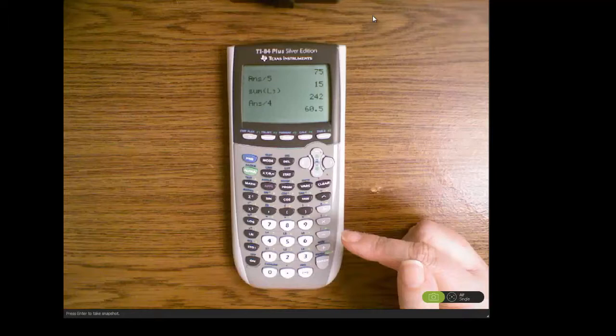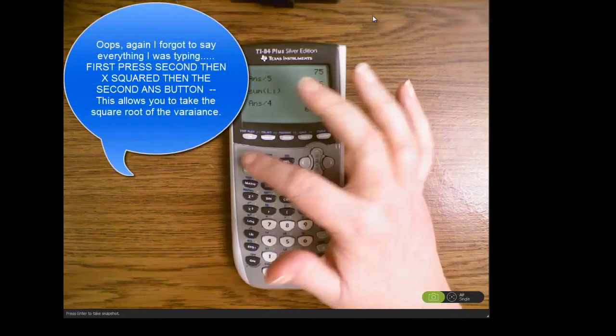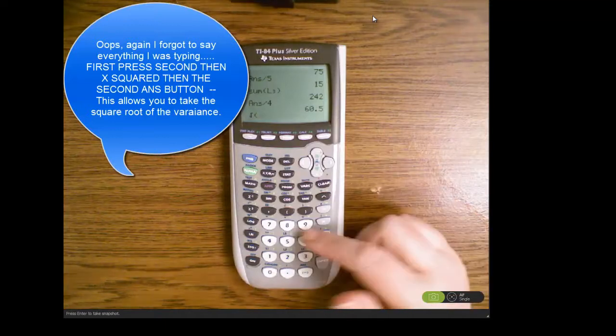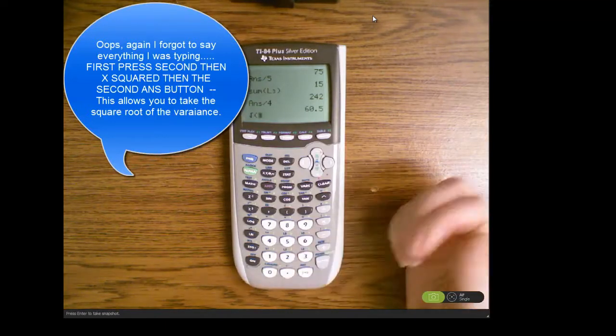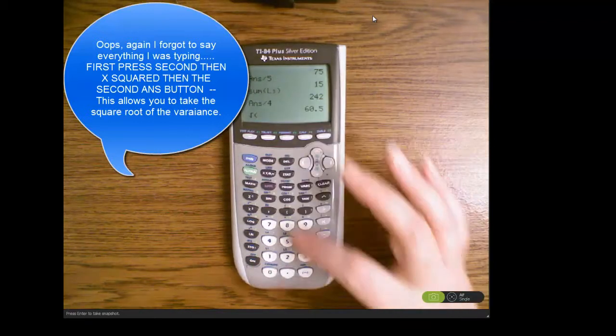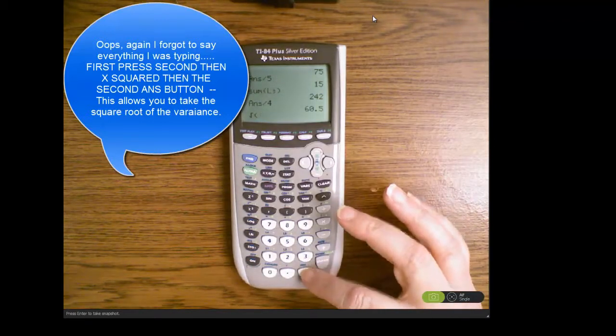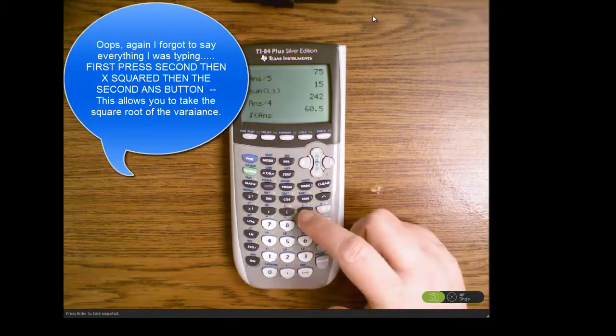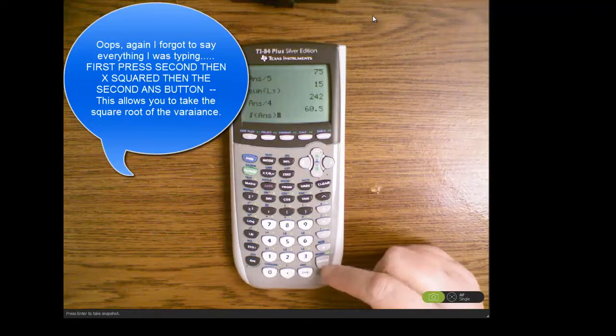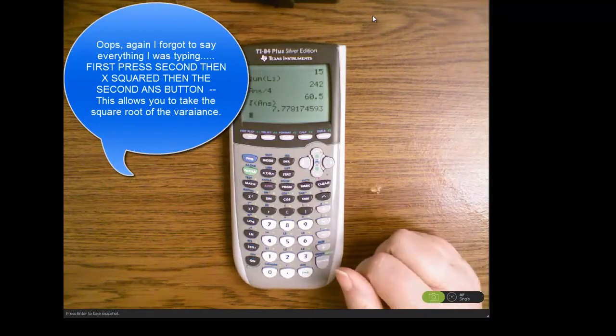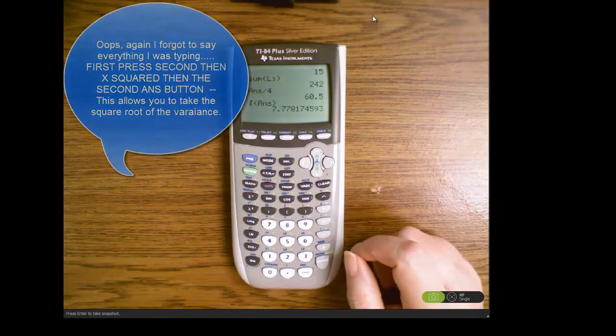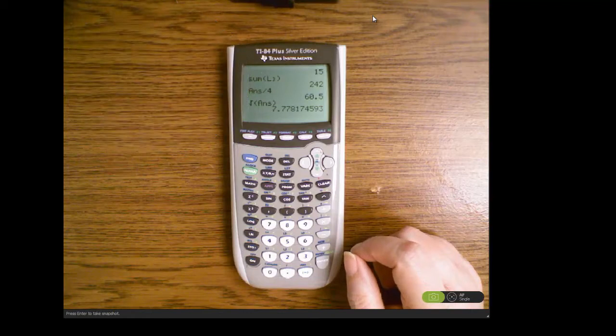Then to get the sample standard deviation we take that value. It's some of the answers are very complicated, so if you'll hit second and then ANS that'll bring up the previous answer, close the parentheses and press enter. That is the sample standard deviation and you will need to round that answer according to your particular teacher's instructions.